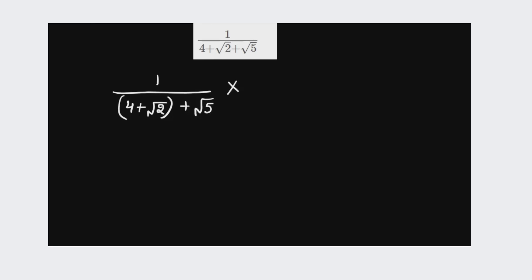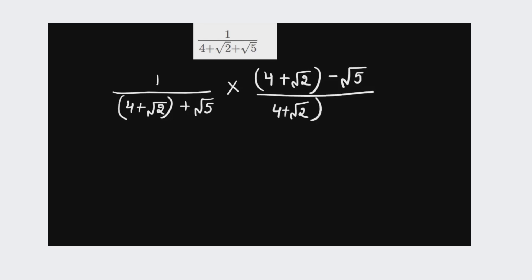Let's start. We have 1 divided by 4 plus root 2 plus root 5. We need to break it into two parts so that we can rationalize it: 4 plus root 2 plus root 5 multiplied by 4 plus root 2 minus root 5, divided by 4 plus root 2 minus root 5.